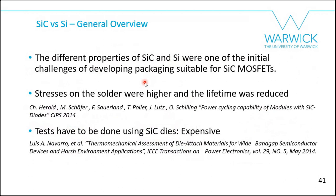These different properties of silicon carbide were one of the initial challenges for developing suitable packaging. Some have already reported higher stresses on the solder and reduced lifetime for SiC. Critically, tests must be done using silicon carbide dies — these tests can be expensive. You want to evaluate a new packaging alternative for silicon carbide? You have to run those tests with silicon carbide chips. Results that are good for silicon may not be the same when applied to silicon carbide.